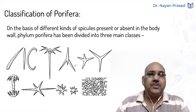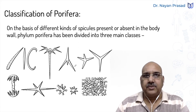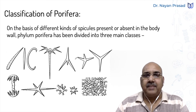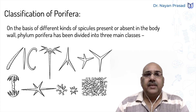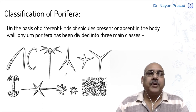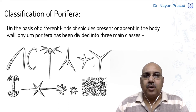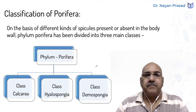Remember, spicules are the skeletal materials of Porifera. Skeletal materials include spicules as well as fibers. The spicules may be calcareous, that means made up of calcium carbonate, or may be siliceous, means made up of silica. So on the basis of these structures, Phylum Porifera has been divided into three different classes.